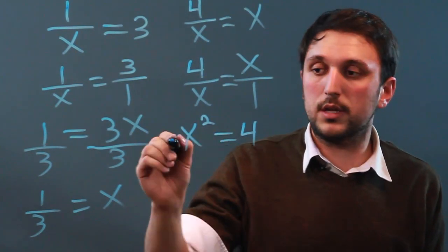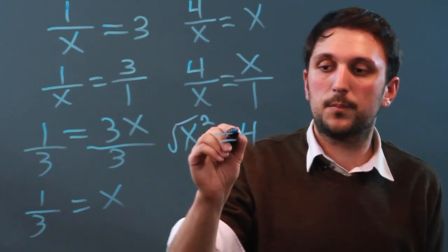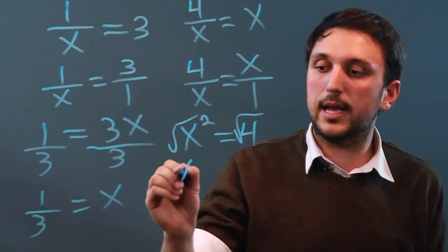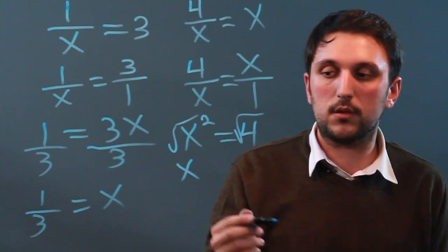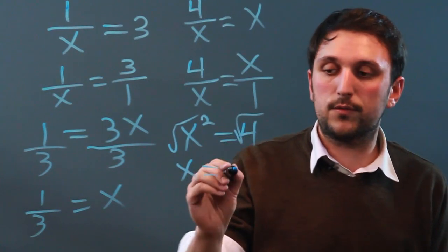So, now we take the square root of each side, and we get x, because the square root of x squared is just plain x, equals the square root of 4, which is 2.